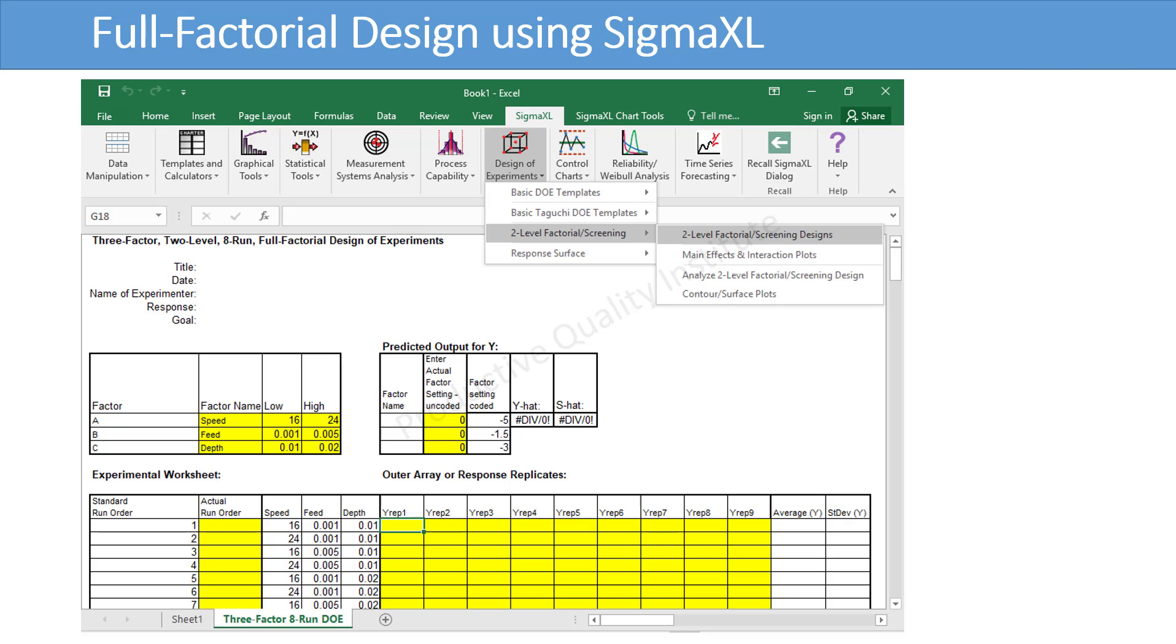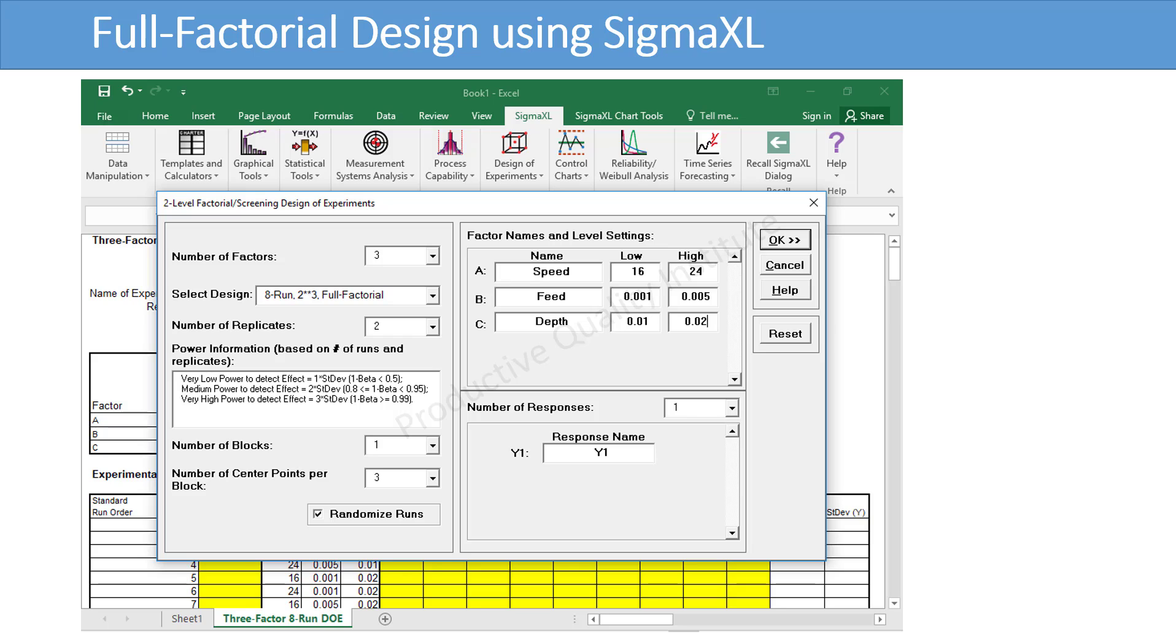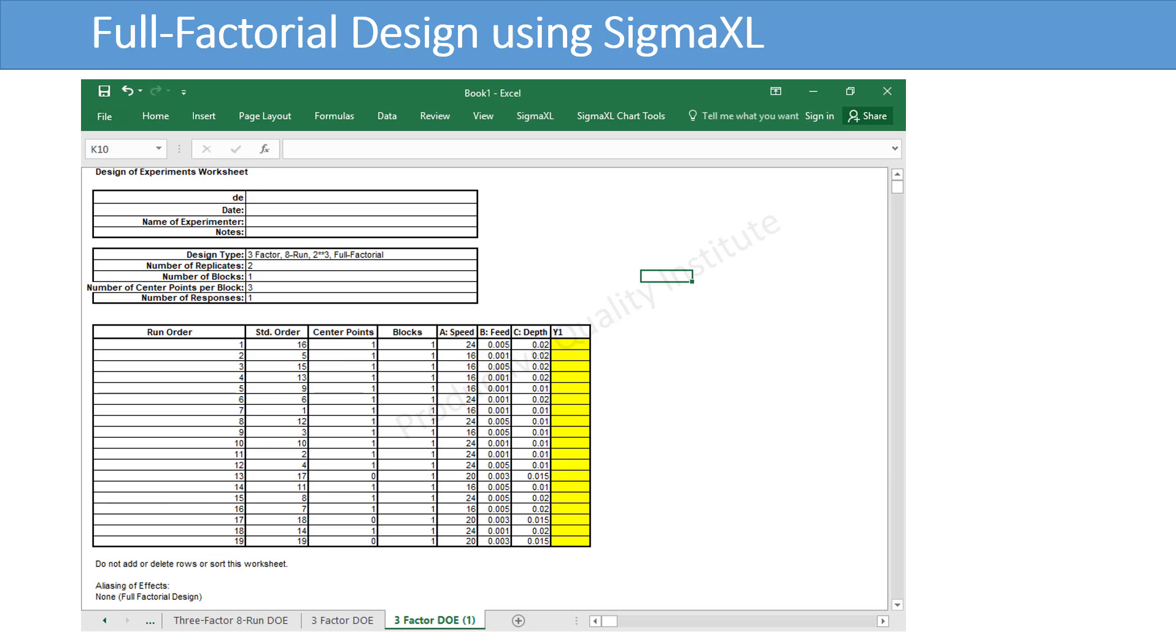However, to accommodate up to 19 factors with randomization, replication, and blocking, click Sigma XL, then Design of Experiments, then click Two Level Factorial Screening Designs. The dialog box will open. First, choose the number of factors, then select the design of experiment. If you want to have more than one replicate, enter the number of replicates. For random runs, click Randomize Runs. Enter the number of center points per block. Then enter the factor names and both the high and low level settings. Finally, enter the response name. In the Design of Experiment worksheet, enter the experiment results in the response column according to the run order.